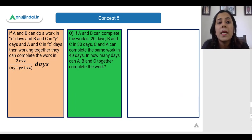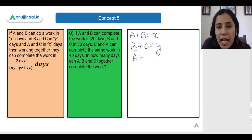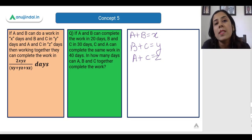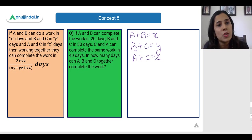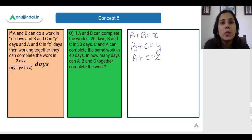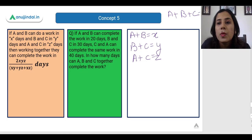Here we have: A and B can do a work in X days, B and C can do it in Y days, and A and C can do it in Z days. This type of question requires solving simultaneous equations, which can get very tedious. This shortcut will help you get the answer really fast. We need to find the time taken by A, B, and C to do the job together.